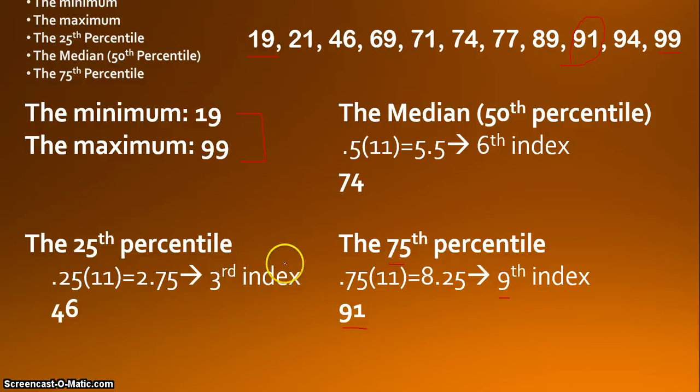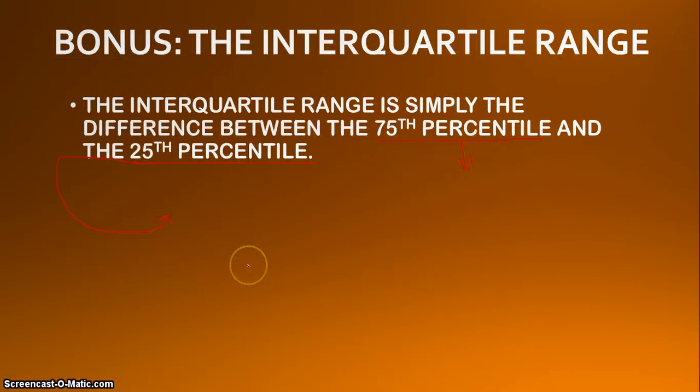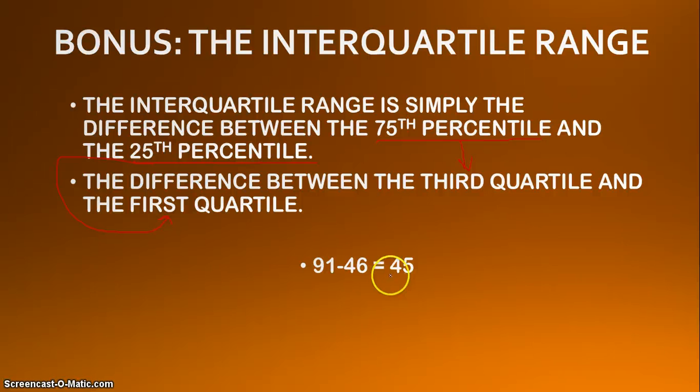So, going back to our previous data set, the 25th percentile was at 46. The 75th percentile was at 91. We simply take the difference between these two, and we find our interquartile range is 45. So, that tells us the difference between the 75th and 25th percentile is 45.